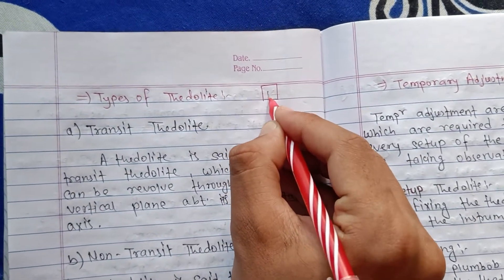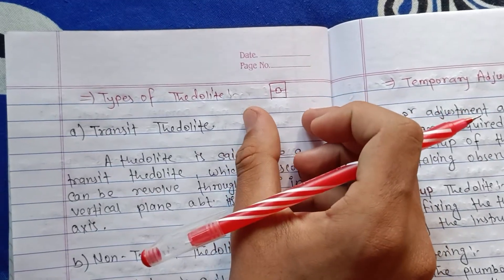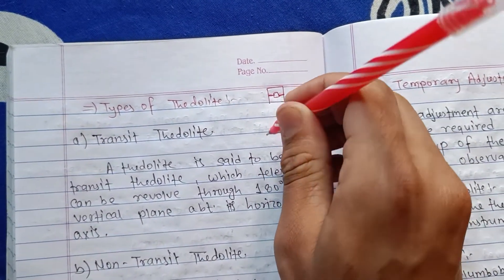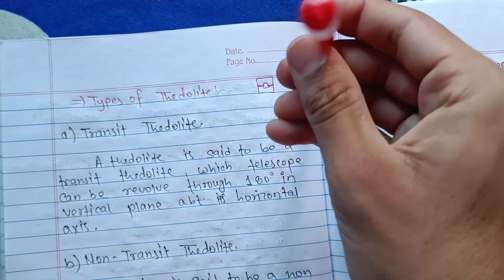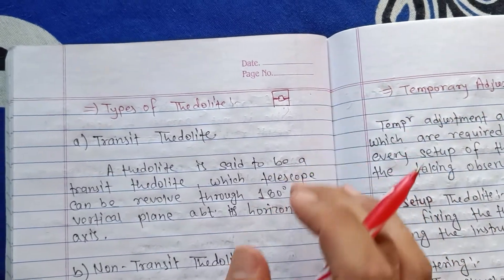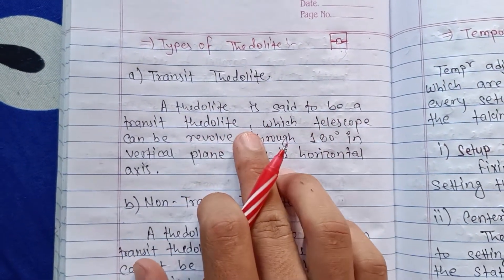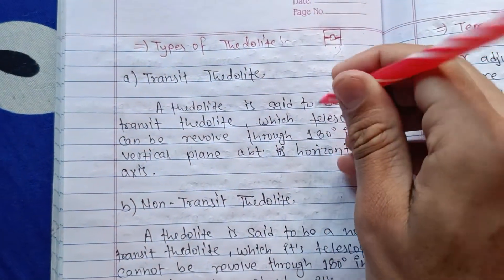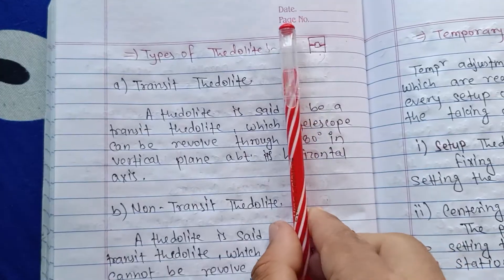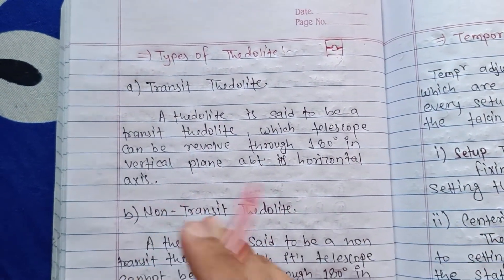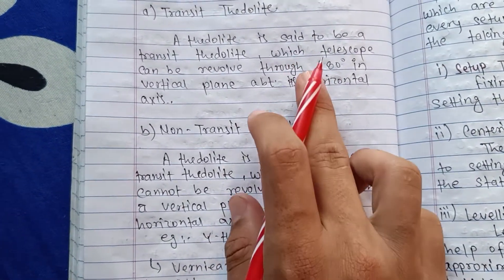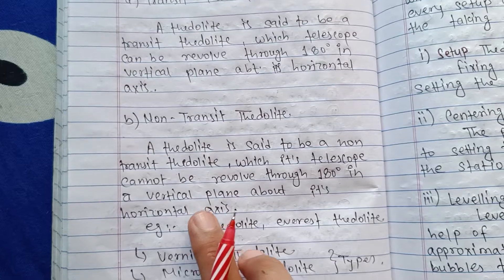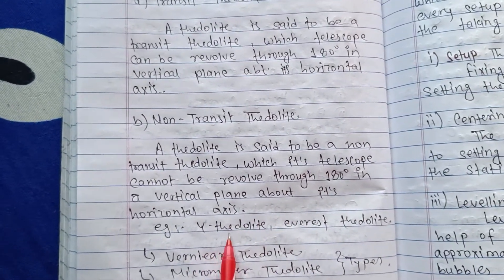A theodolite has two types based on the telescope. A transit theodolite is one whose telescope can be revolved through 180 degrees in a vertical plane about its horizontal axis. A non-transit theodolite is one whose telescope cannot be revolved through 180 degrees in a vertical plane about its horizontal axis. An example of a non-transit is the Y-theodolite.